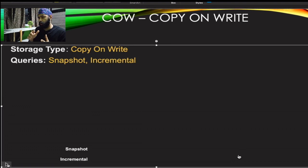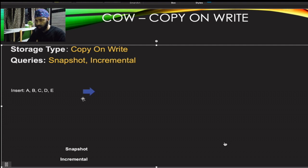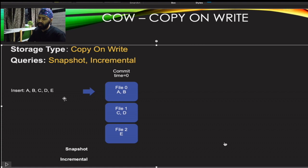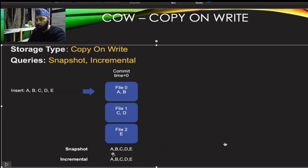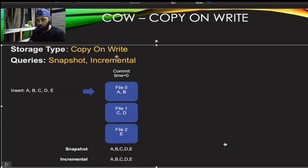In Copy on Write, you can do two types of queries: snapshot-based queries and incremental queries. Let's take an example. At time zero, I insert records A, B, C, D, E. These get stored across three files: File 0 has A and B, File 1 has C and D, and File 2 has E. At this point, both a snapshot query and an incremental query return the same result: A, B, C, D, E — since this is the first insert.